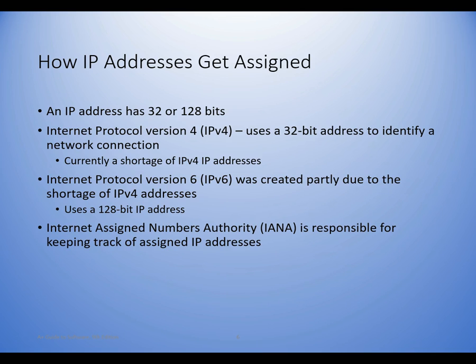An IP address has 32 or 128 bits. IPv4 has 32 bits — a dotted quad with 8 bits in each octet, going up to 255. IPv6 has 128 bits; typically 64 bits are used for network and 64 for host, giving a tremendous number of addresses. IPv4 uses a 32-bit address to identify the network connection, and we are currently out of IPv4 addresses.